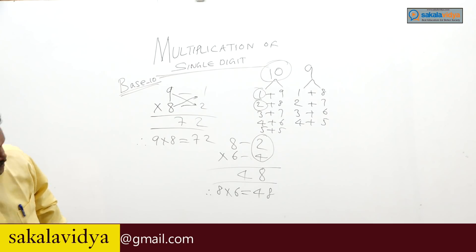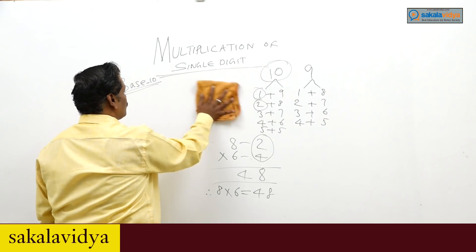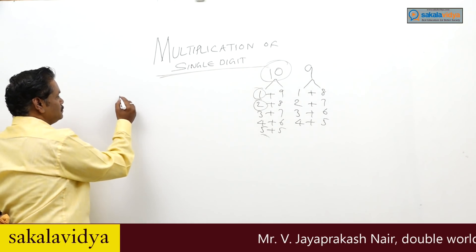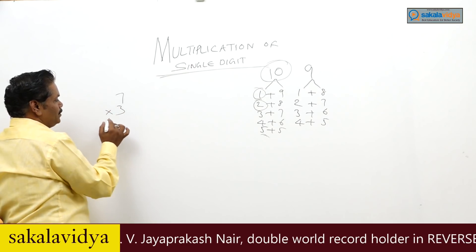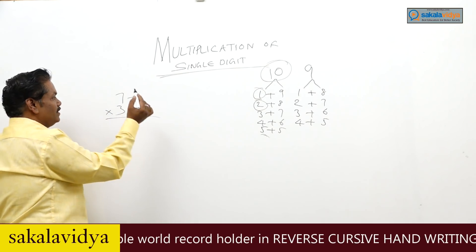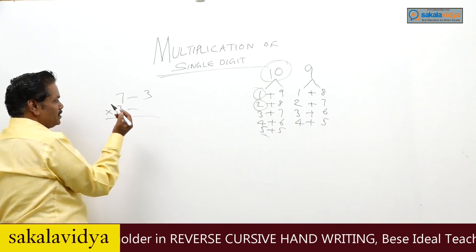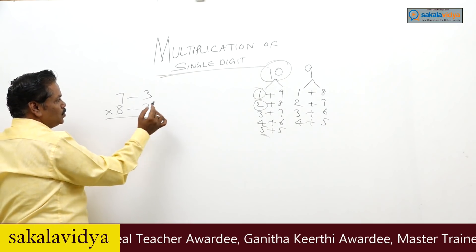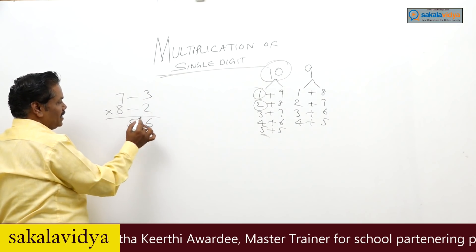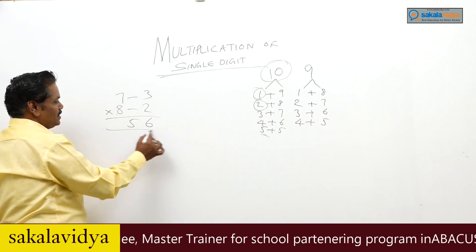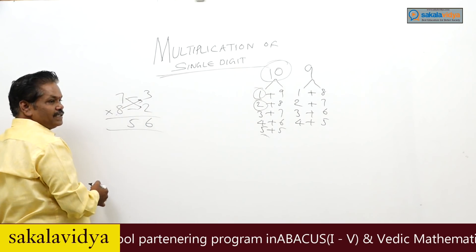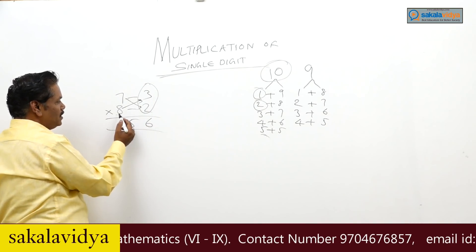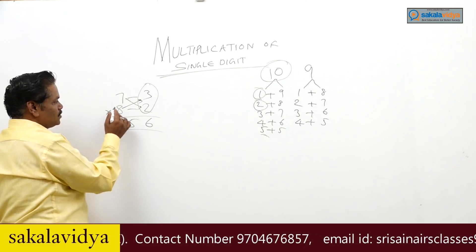Let us see some more examples. 7 into 8: complement of 7 is 3, complement of 8 is 2. Multiply the units: 3 into 2 is 6. Cross subtracting: 7 minus 2 is 5, or 8 minus 3 is 5. So 7 into 8 is 56.